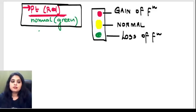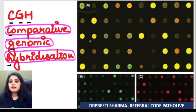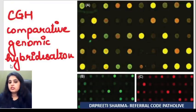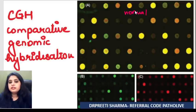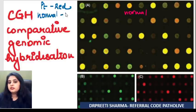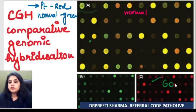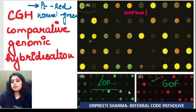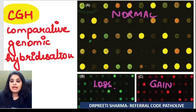For example, in this CGH: a yellow color means everything is normal. If you see more of red (the patient's color), this is a gain of function mutation. If you see less of red, this is a loss of function mutation. That is exactly the principle and use of Comparative Genomic Hybridization.